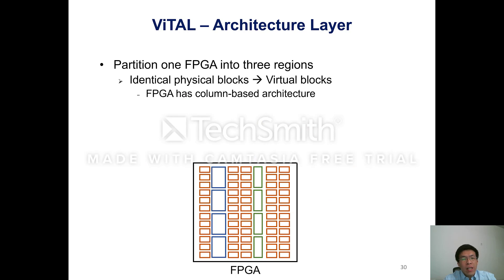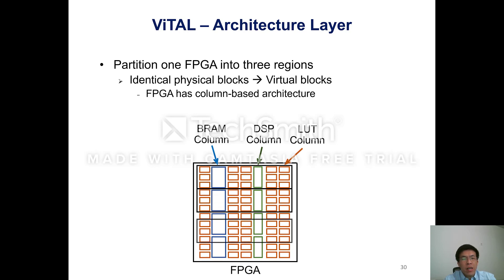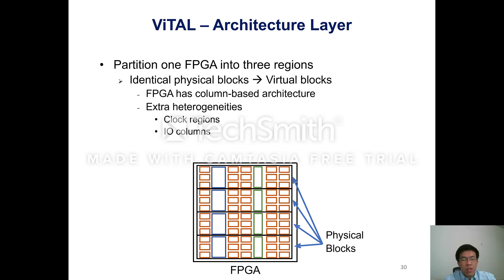To create identical physical blocks on commercial FPGAs, we leverage the fact that FPGAs have a column-based architecture, meaning one column has the same type of resources, so we partition FPGAs in the row direction to create identical physical blocks. We also note that this column-based architecture is only a simplified view, and commercial FPGAs introduce several other heterogeneities, which have been correctly handled in our FPGA implementation. More details can be found in our paper.